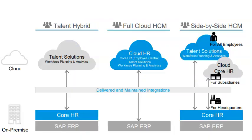Here are the deployment options for SAP SuccessFactors. We have on-premise and cloud. For on-premise, we have core HR and SAP ERP. For cloud, we have talent solutions, workforce planning and analytics, and full cloud HCM — covering cloud HR, core HR, talent solutions, and workforce planning analytics. We also have a side-by-side HCM option with talent solutions alongside cloud core HR. We can maintain it on cloud, on-premise, or a hybrid where some are on cloud and some on-premise.